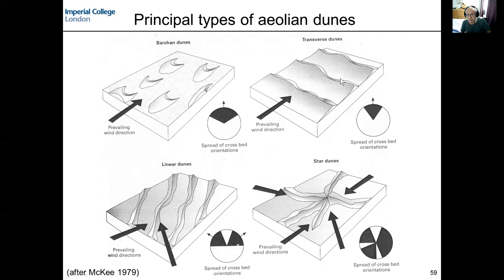Moving to the top right, these dunes are also asymmetrical with the steep face facing downwind, but here the crests are more continuous laterally - slightly sinuous or straight. Again, using the dip of the lee face as a paleocurrent measure, those cluster in one direction around the mean pointing in the prevailing wind direction. These will typically be preserved as tabular cross beds or potentially trough cross beds with very broad, extensive troughs.